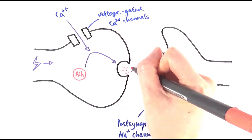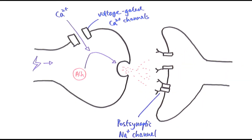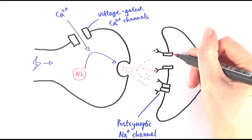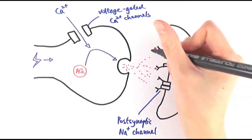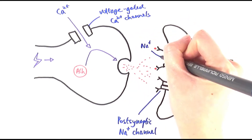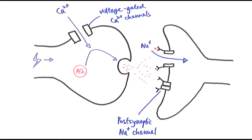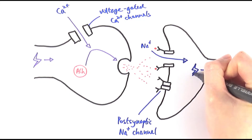The acetylcholine molecules diffuse across the synaptic cleft — simply diffusion across the gap. Once the acetylcholine reaches the other end, it binds to the receptors, which open the post-synaptic sodium ion channels. The sodium ions then have a massive influx down the electrochemical gradient into the membrane, causing depolarization and generating a new action potential in the post-synaptic neuron.